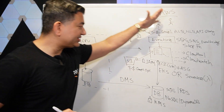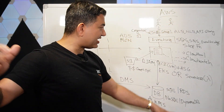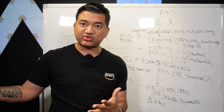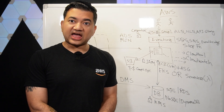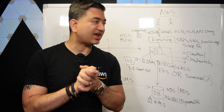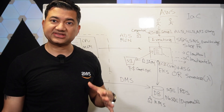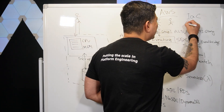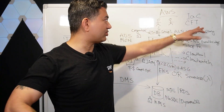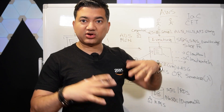In the real world, you're not going to go into the console and create all this manually — that's time consuming, hard to reproduce in another account, and error prone. The solution is Infrastructure as Code. You need to know at least one IaC tool. AWS's native option is CloudFormation (CFT). If you already know Terraform, then CloudFormation is optional.